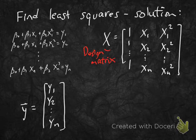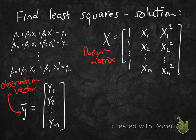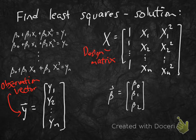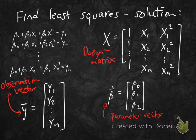We have our observation vector y, which is y₁ up to yₙ — the y-coordinates of the data points we're given. Our parameter vector β is (β₀, β₁, β₂) — the vector of unknowns that we're going to find a least squares solution for.